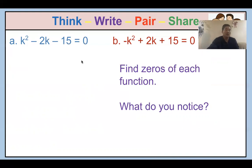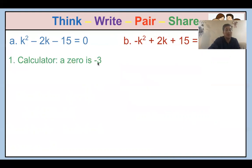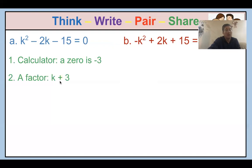Let's try together. So k squared minus 2k minus 15 equals zero. If you put it into the calculator, you get the zero as negative three. You will see two zeros actually, but let's say you have only one zero — then the factor is k plus three. The other factor: k times what gives negative 15? Negative five. So k minus five. Those are all the factors.